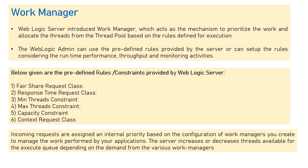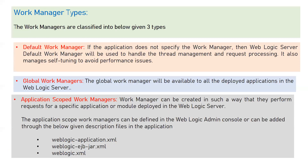Incoming requests are assigned an internal priority based on the Work Manager configuration you create to manage work performed by your applications. The server increases or decreases threads available for the execute queue depending on demand from the various Work Managers. That means you have multiple applications deployed, and for each application you configure a Work Manager with policies on how many threads to assign from the thread pool.